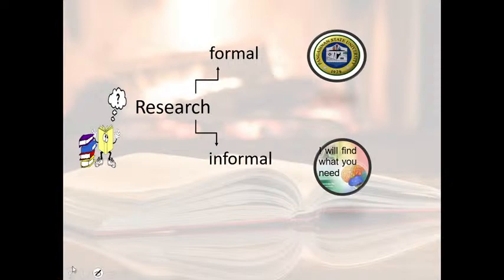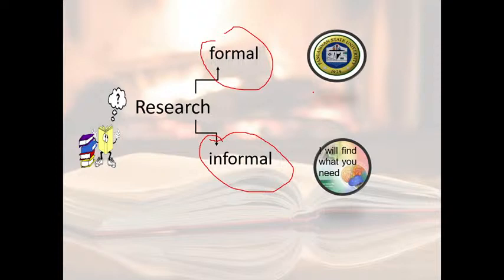Research can be of two types: formal and informal. In formal research, we work within a university, following a logical process and a research institute or government department, with funding, and we have to prepare a report and present findings. In informal research, we find what we need for ourselves — we are not required to work within any institution. If you conduct formal research and publish its results properly, that is formal research. In informal research, there is no strict requirement to publish.